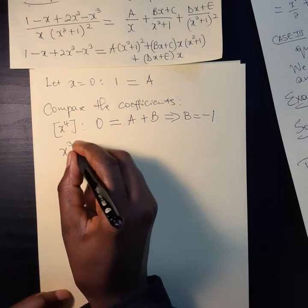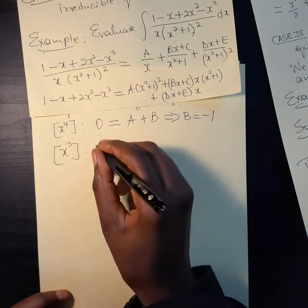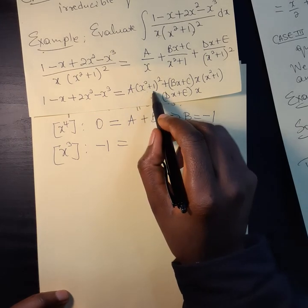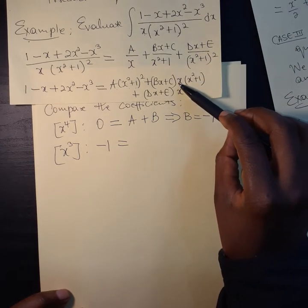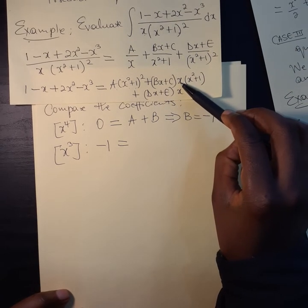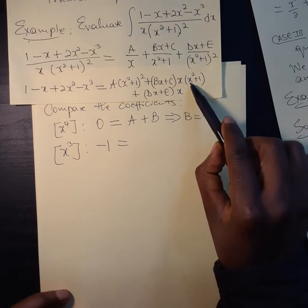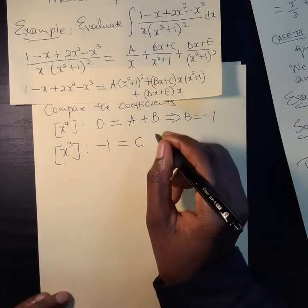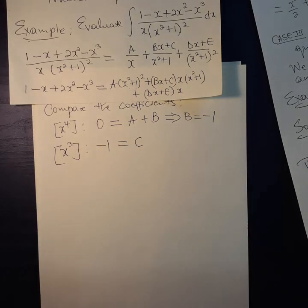Then we come to the x cubed term. On the left-hand side, the coefficient of x cubed is minus 1. Expanding the right-hand side, we find that C contributes here. So we determine C equals minus 1.